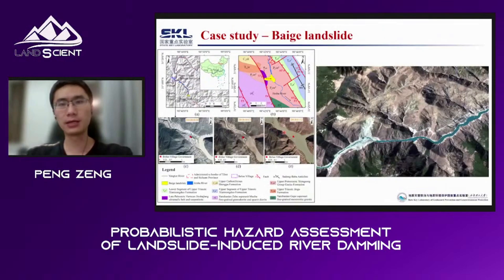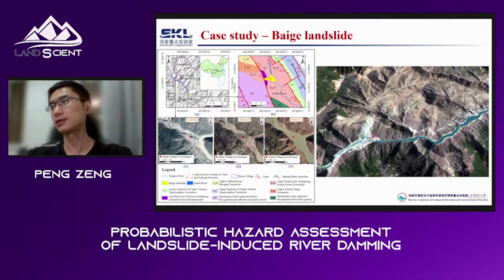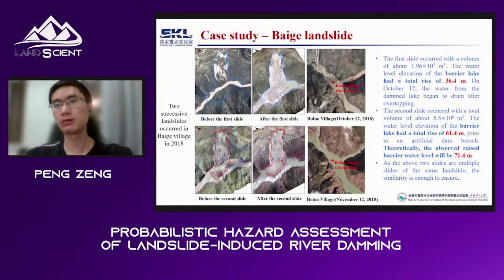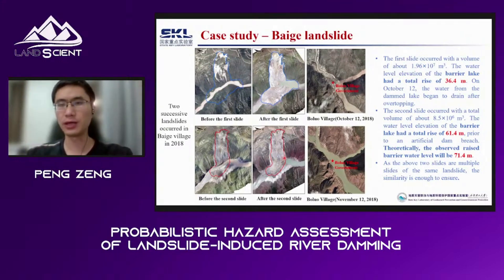This is the Baige landslide. It is located on the western bank of the Jinsha River between Sichuan and Tibet. We can see the landslide, the dam, and the Jinsha River. We observed two successive landslide-induced river damming events in 2018. The first dam height is about 36 meters, and the second dam height is about 61 meters. We can see the follow-up village upstream — the river was submerged twice.